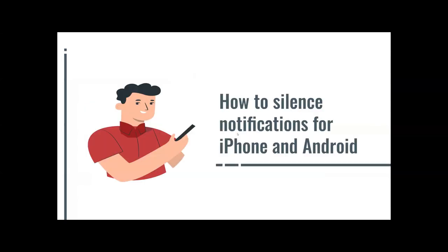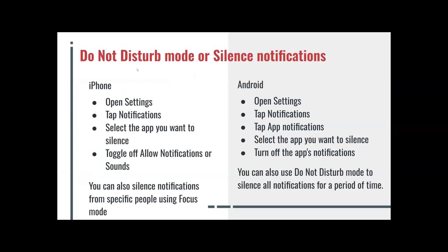How to silence notifications for iPhone and Android. Do Not Disturb mode, or silence notifications — I'm sure a lot of us have heard about Do Not Disturb and silence notifications, especially if you're going to sleep or you're busy. For iPhone, what you do is open the Settings, tap Notifications, select the app you want to silence, and toggle off Allow Notifications or Sound — basically, just slide it to the back.